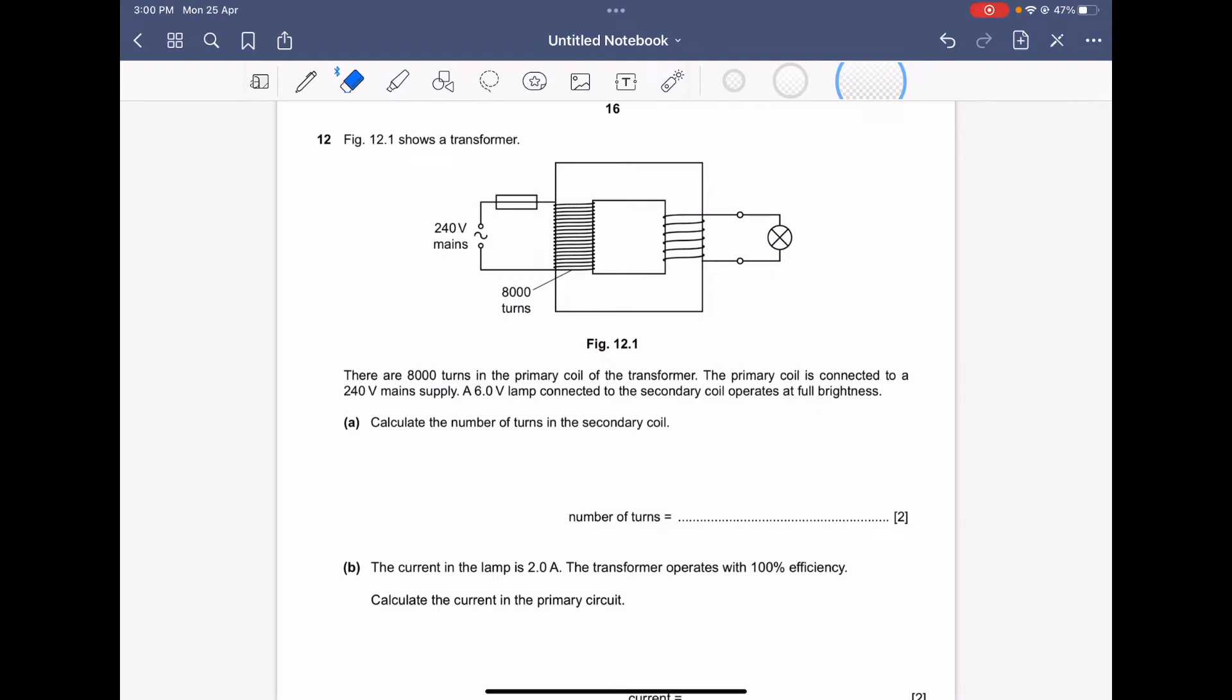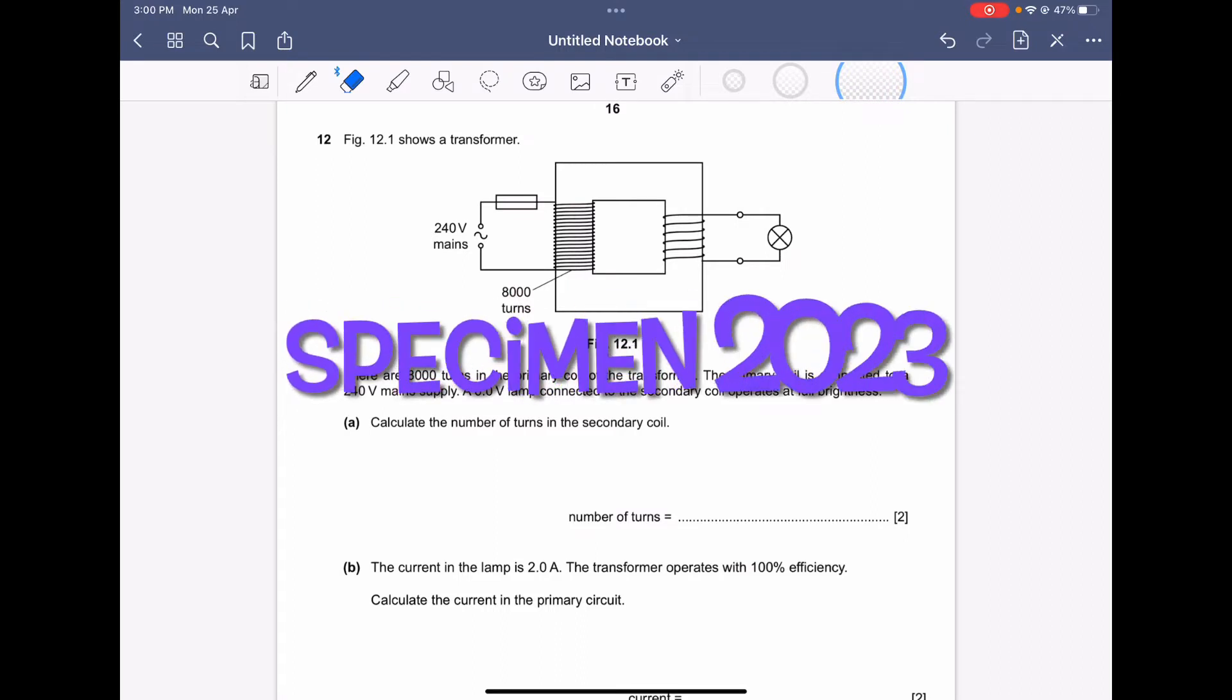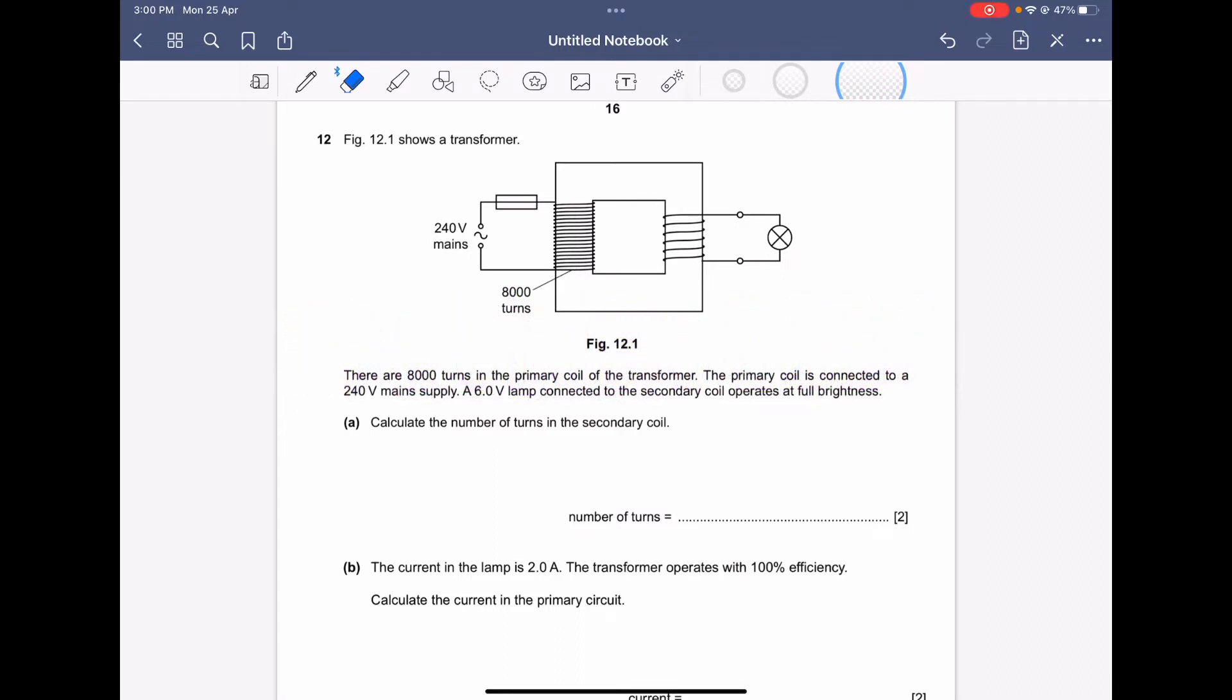Hi guys and welcome to our YouTube channel. Today we have question 12 from physics paper 2023 specimen paper. Figure 12.1 shows a transformer and the main power supply, which is the primary voltage Vp at 240V.